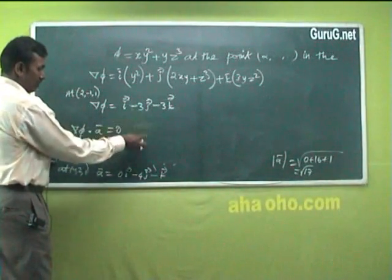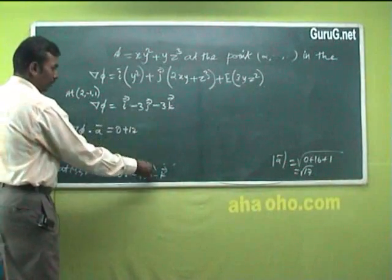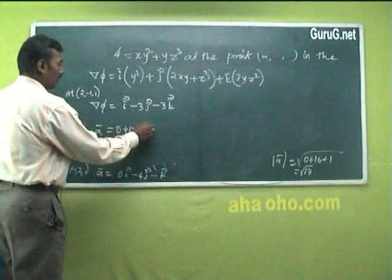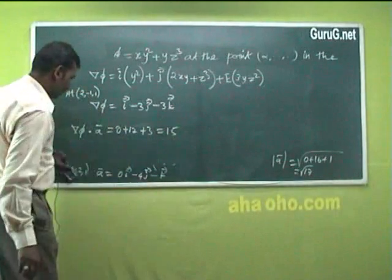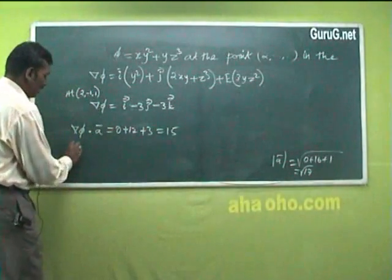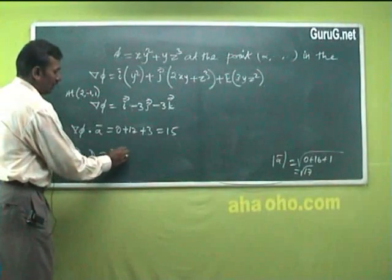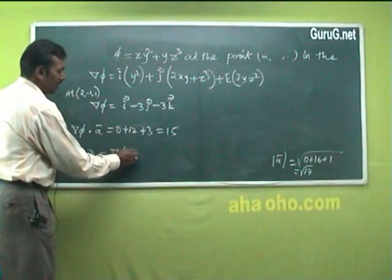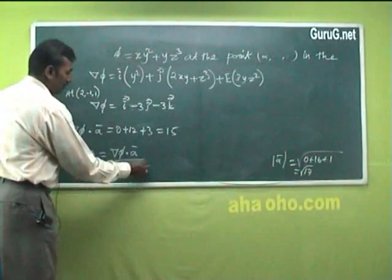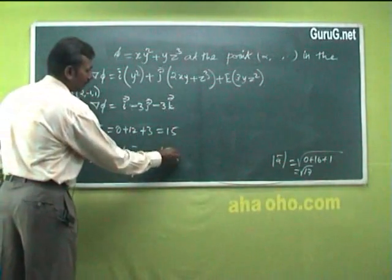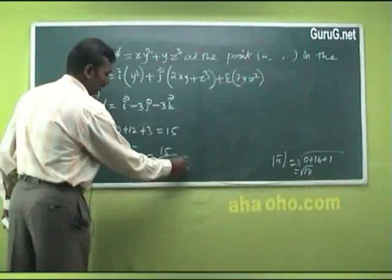Del φ · A = (1)(0) + (−3)(−4) + (−3)(−1) = 0 + 12 + 3 = 15. Therefore, the directional derivative = del φ · A / |A| = 15 / √17.